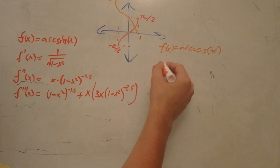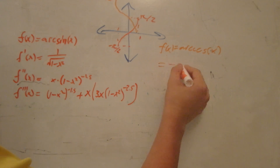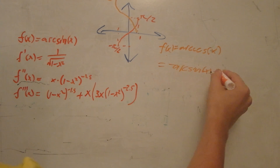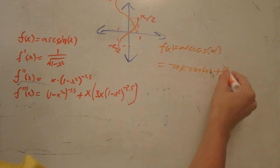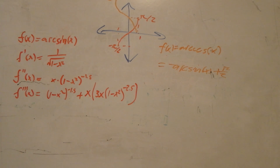So more or less, arc cosine is equal to a flipped arc sine added to pi halves. For this reason, we're only going to solve the arc sine Taylor series, and therefore we'll know the arc cosine Taylor series.